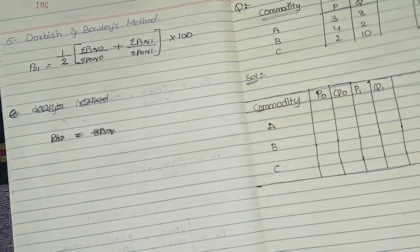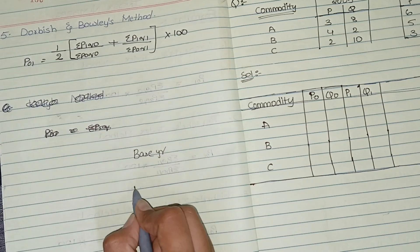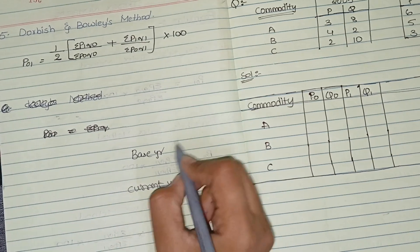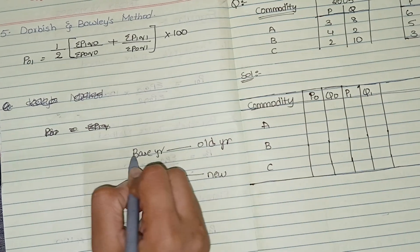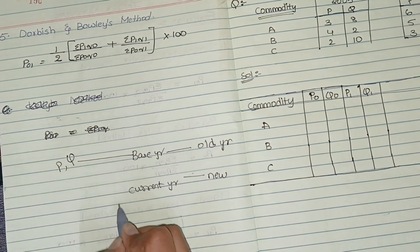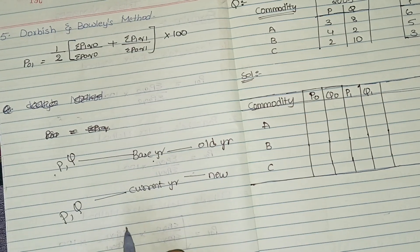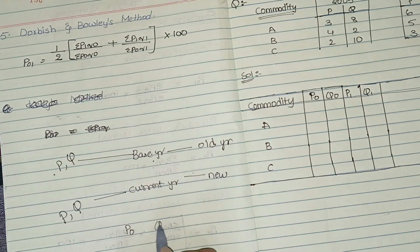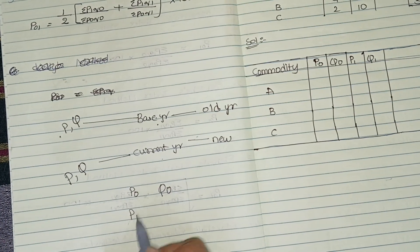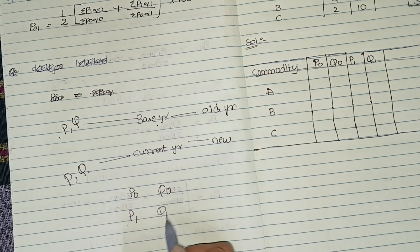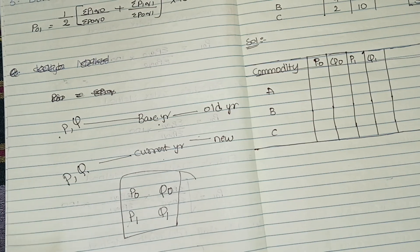In this unit, the base year is the old year and the current year is the new year. In the base year you have price and quantity; in the current year you also have price and quantity. Base year price is called p0, base year quantity is q0, current year price is p1, and current year quantity is q1.